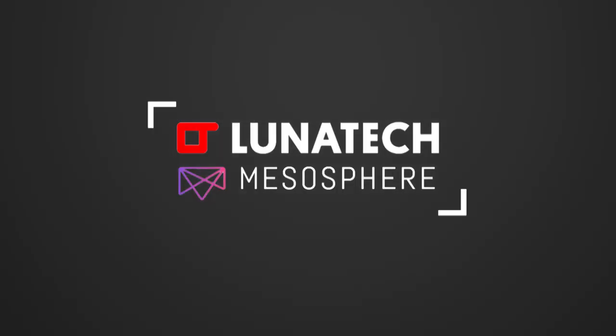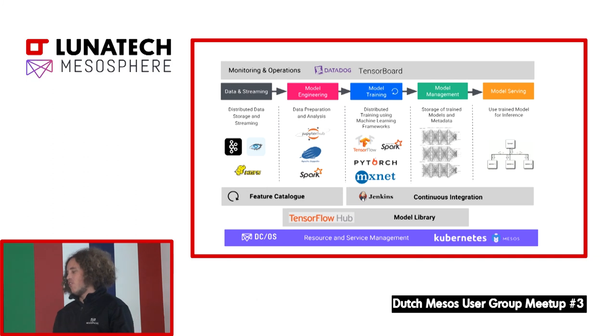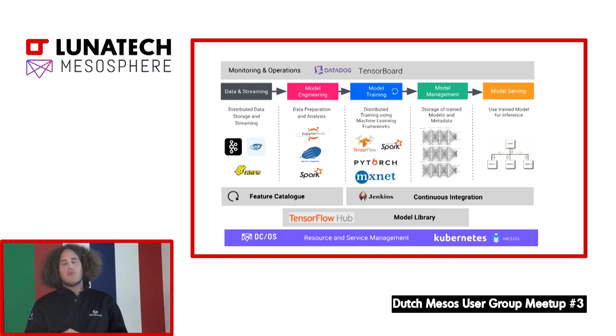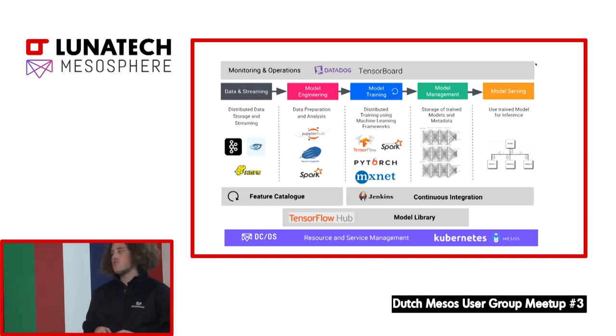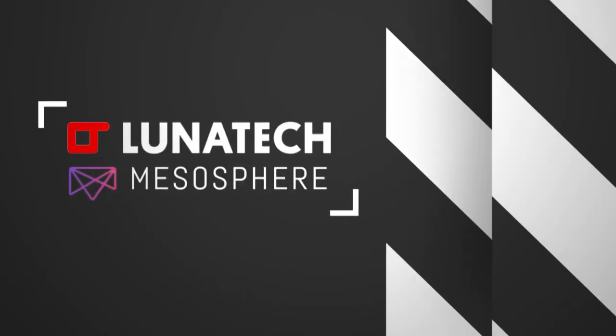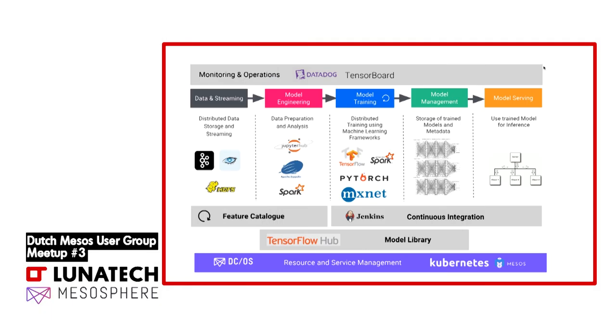Typically the first step is using Kubeflow — that's basically machine learning on Kubernetes. But in the end, if we further develop that, Kubeflow actually isn't enough by itself. What we typically end up with is building a full-fledged pipeline, where on the left we start with data and streaming. Then we have model engineering, distributed model training, we need to store and manage trained models, we need to do serving, and we probably want continuous integration to automate all those steps.